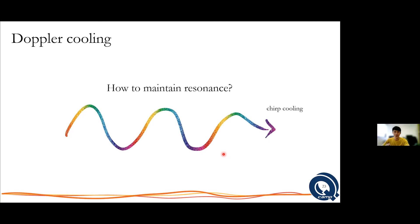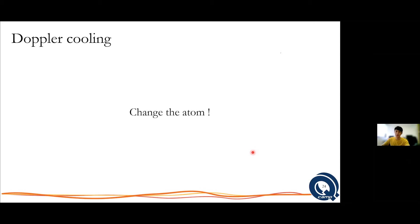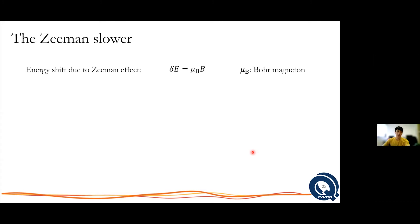One of the reasons I love this topic is because there exists another very elegant solution: instead of changing the laser, you can change the atom — specifically, you change the atom's energy levels. The energy levels come from the potential that the electrons see. You can do other things to manipulate these energy levels by applying electric or magnetic fields. For the case of a magnetic field, there is an energy shift known as the Zeeman effect.